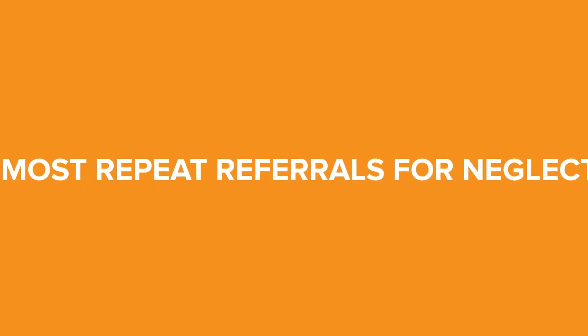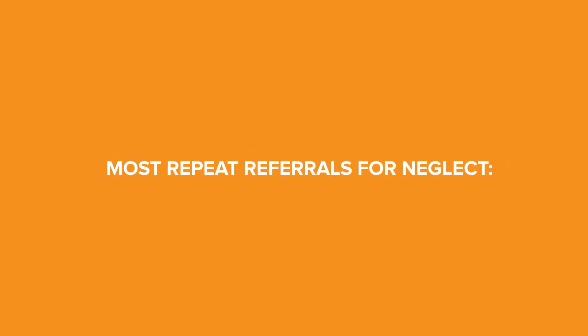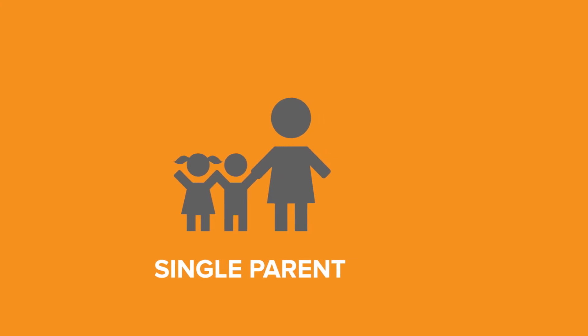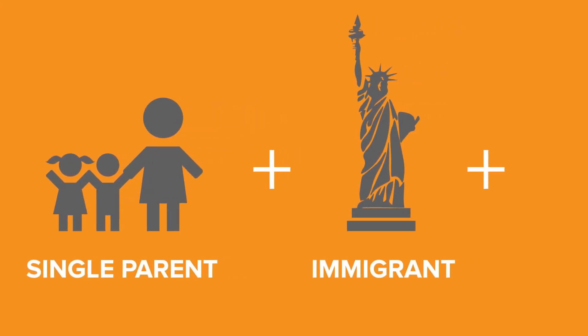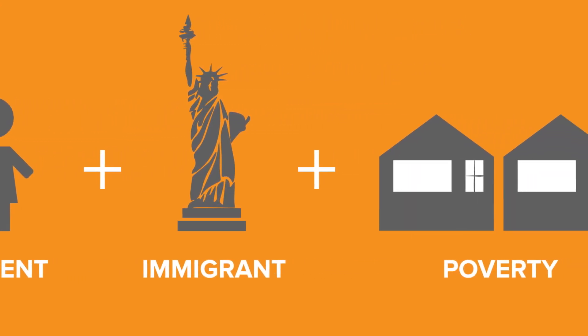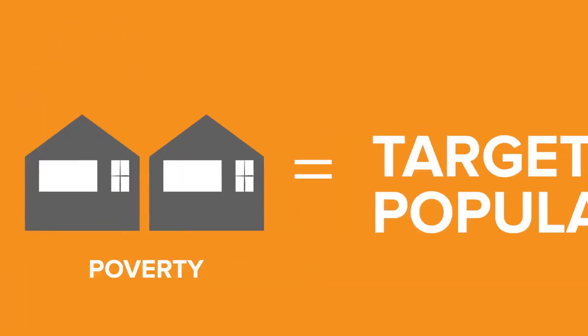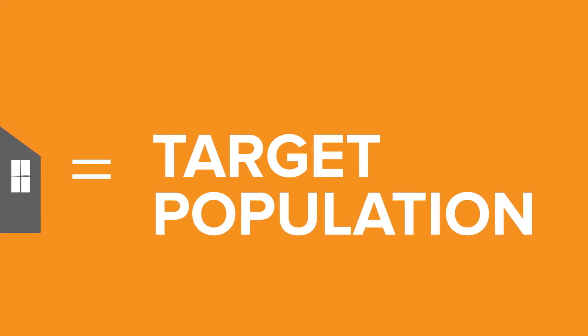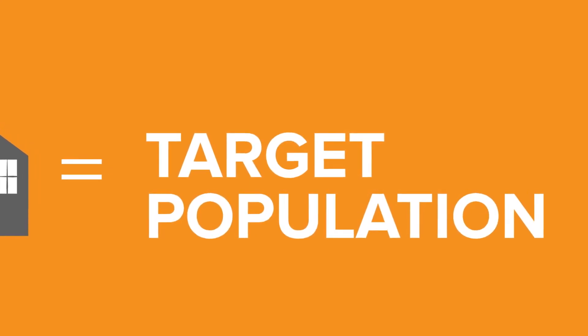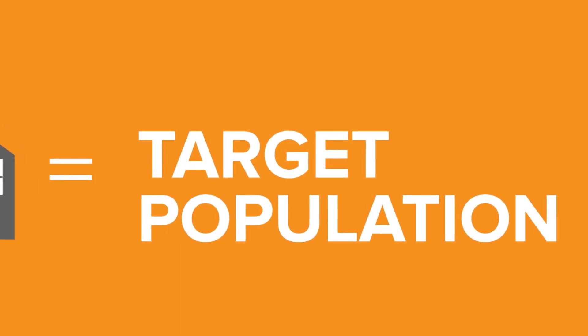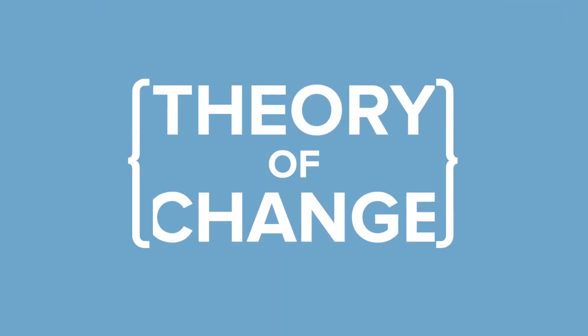Imagine that the team's assessment of the problem found that most repeat referrals for neglect were for single-parent immigrant families in neighborhoods experiencing high rates of poverty and homelessness. This would be the target population. Now that there's a better understanding of the problem and who we intend to target for the intervention, the next step is to develop a theory of change.